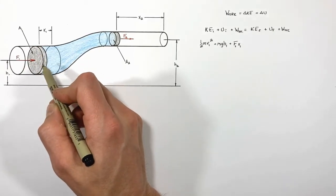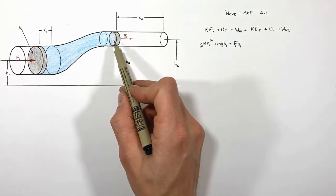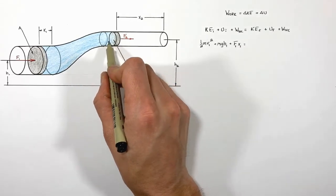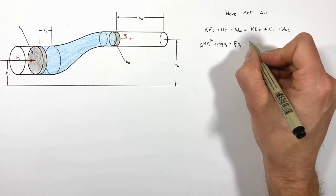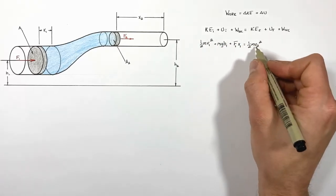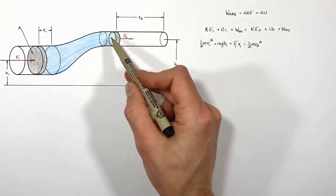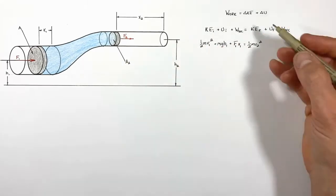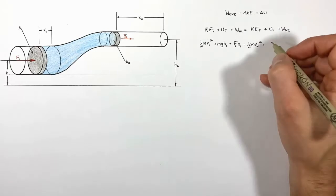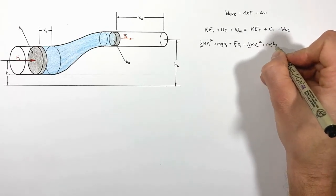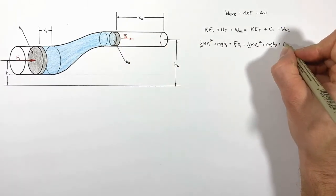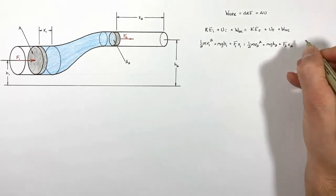Moving to the output side of the system, we have almost the same setup. The output piston gets pushed forward by the fluid and therefore moves, so it has kinetic energy of one-half mv₂², where v₂ is the velocity at point two — the outlet side. Plus our final potential energy mgh₂, and then the non-conservative work done at this piston, which is F₂ times x₂.